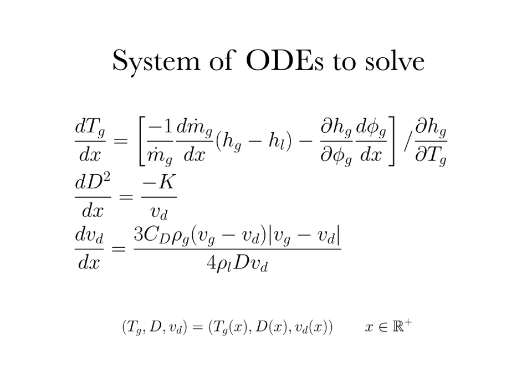Finally, we have a system of ODEs to solve for, involving three dynamical variables: Tg, D (or equivalently D²), and Vd — all as functions of position x along the combustion chamber axis.